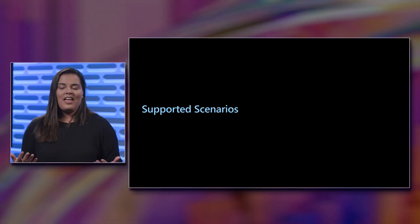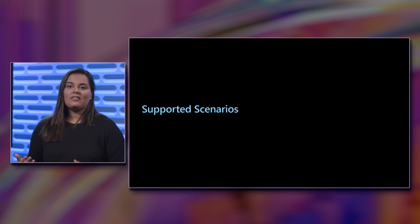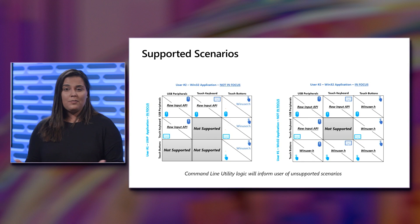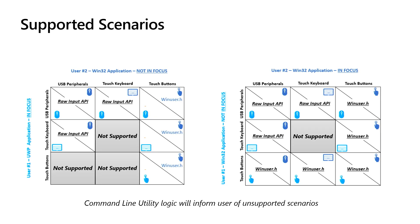Let's talk about supported scenarios and how you can use the dual operator utility to bring your solutions to life depending on your chosen input styles. We have two matrices: on the left, a UWP and Win32 application matrix; on the right, a matrix for two Win32 applications. The command line utility logic will ensure that if there are any unsupported solution scenarios, you won't be able to configure them. However, since this is open source, we welcome you to investigate and hack into it. The sample today provides only supported solutions, but we encourage you to help us develop this capability further.